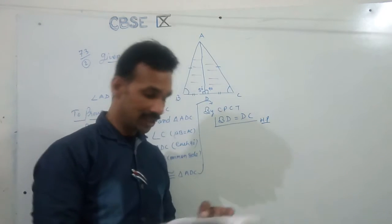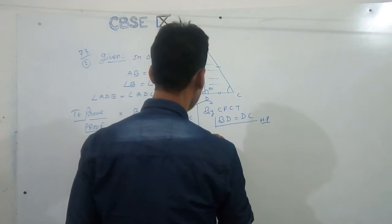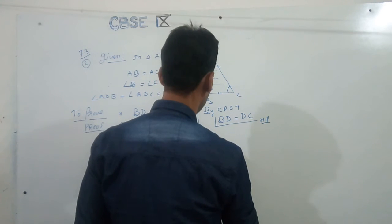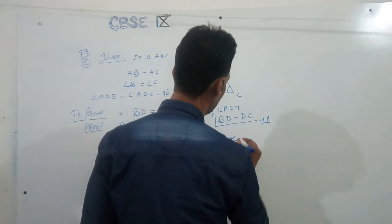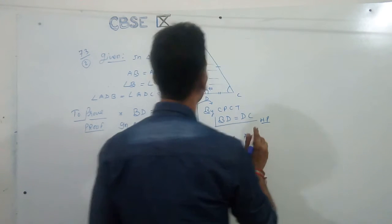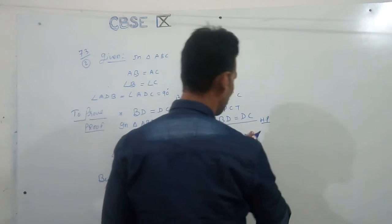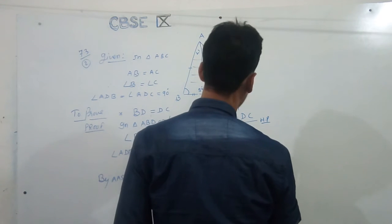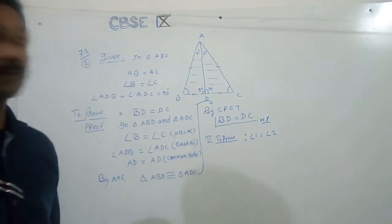Now we will take second one: AD bisects angle A. Then second, to prove AD bisects angle A. Suppose that this is angle 1 and this is 2. Then now we can write angle 1 equal to angle 2, right? We have to prove it. Then proof.